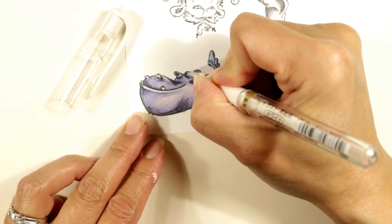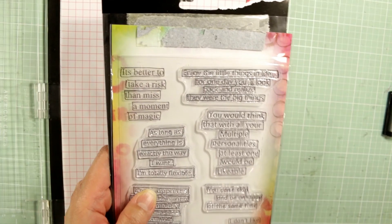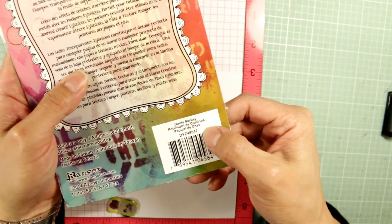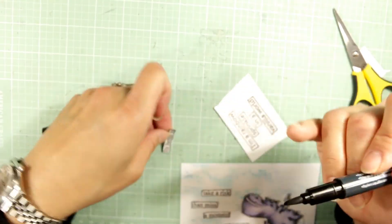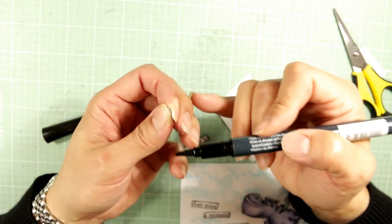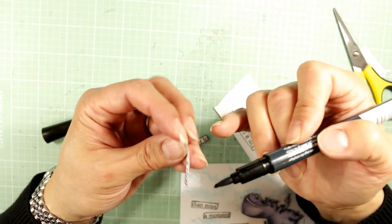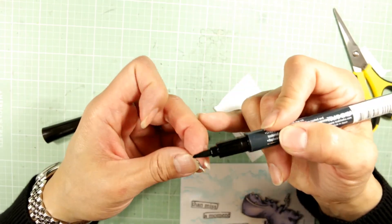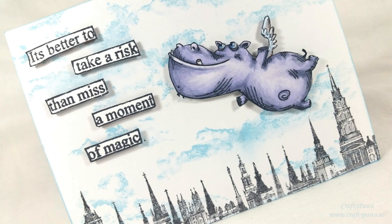I get the Uniball Signo white gel pen to get started on my highlights. And then I added those little highlight dots. This is the quote medley stamp set. And it has the quote that I use for this card, which reads, it's better to take a risk than miss a moment of magic. And here after, I'd heat embossed the sentiment and fussy cut it out, inking the edges with a memento tuxedo black marker. I popped each of the segments of the sentiment as well as the hippo and his wings up on foam dots. So the card has a little bit of dimension and the hippo really pops.